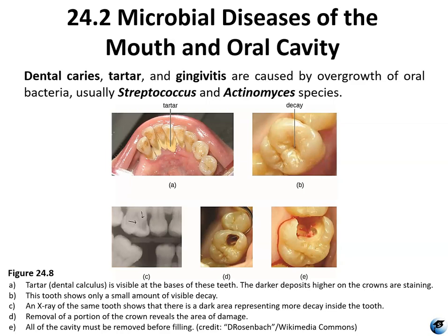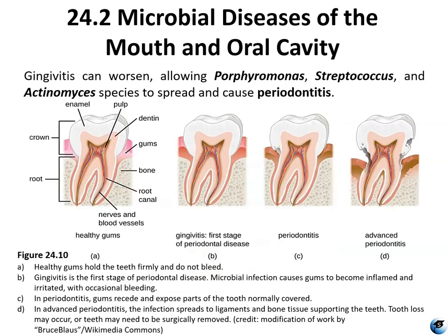This figure shows tartar visible at the base of the teeth and darker deposits on the crowns. A tooth shown here has a small amount of decay visible, but an x-ray reveals more decay actually happening inside in the dentin. Part of the crown has been removed to access the hidden tooth decay, and after removing the decay it is filled by replacing part of the crown. Gingivitis is infection of the gums with bacterial biofilms, usually caused by species of Streptococcus, Actinomyces, and Porphyromonas, and is a form of periodontitis.